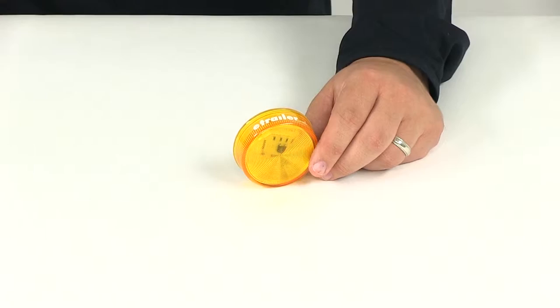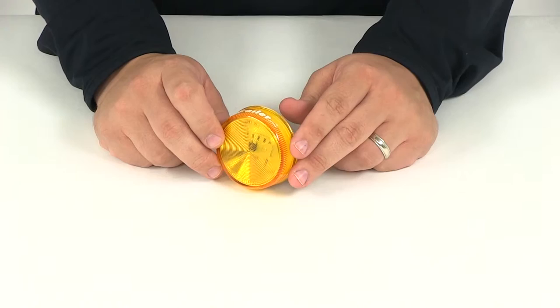Today we're going to be taking a look at part number 162A. This is the Peterson LED two and a half inch round amber trailer clearance light.